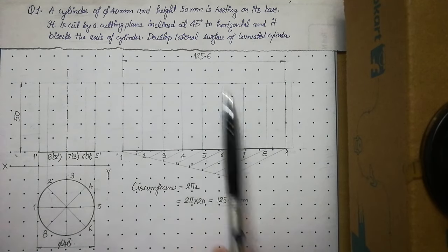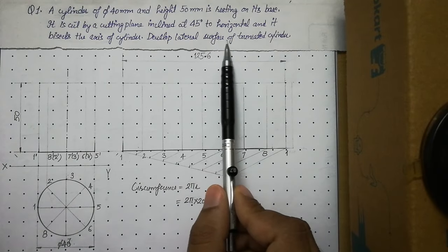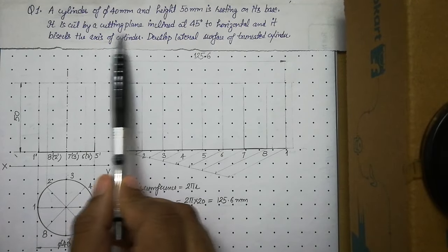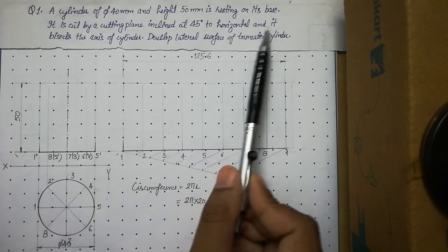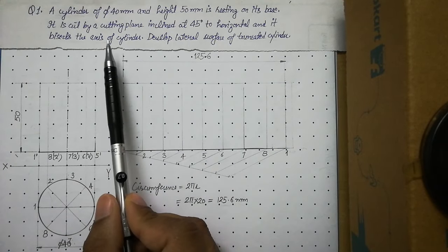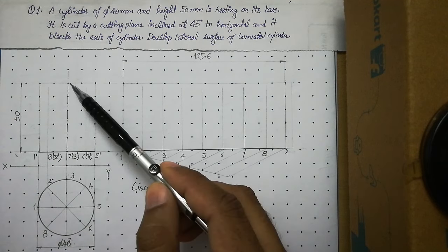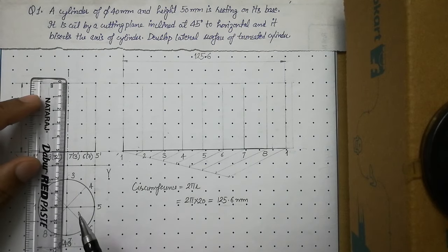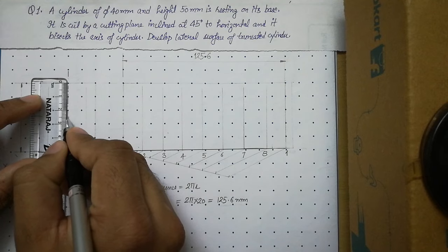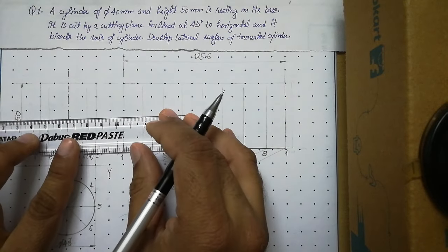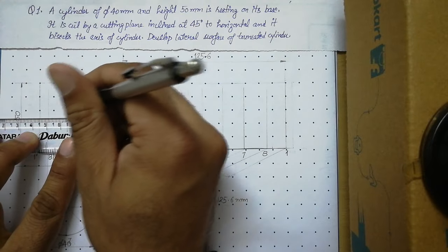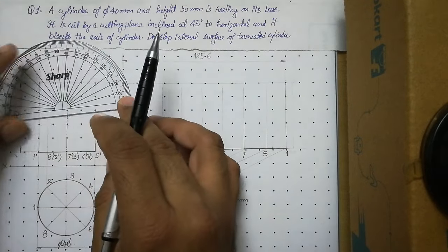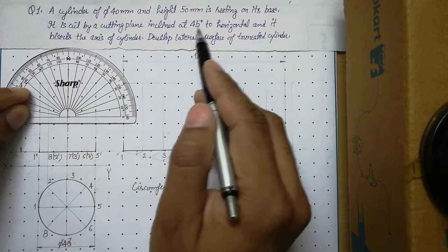Now let us convert this solution into the truncated cylinder. The next step is to introduce the cutting plane. Its position is inclined at 45 degrees to horizontal and it bisects the axis. Show the cutting plane in the front view. The axis goes from this point to this point — it is 50mm — so bisect it, marking a point at 25mm. At this point draw a small horizontal baseline for the protractor.